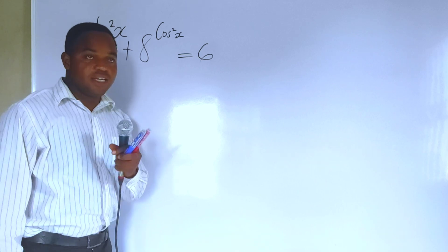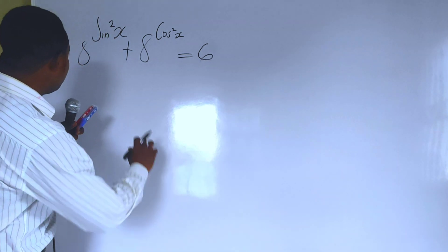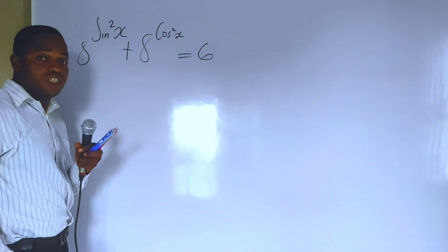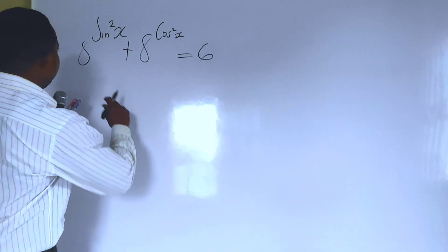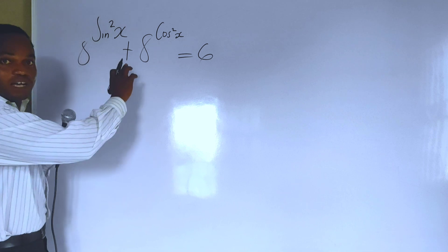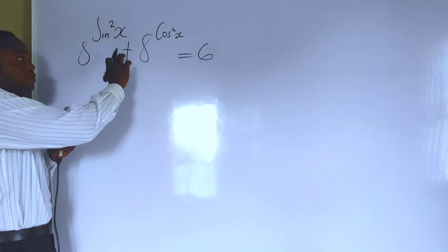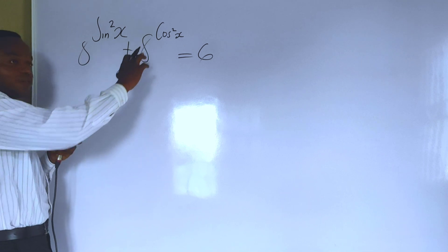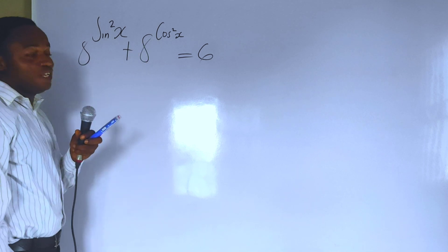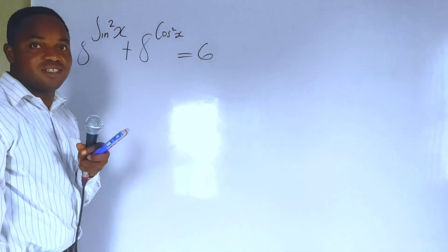Welcome back. In this lesson we are going to be solving this equation: 8 raised to the power sin squared of x, plus 8 raised to the power cos squared of x, equals 6.